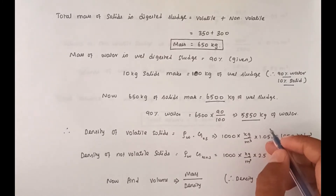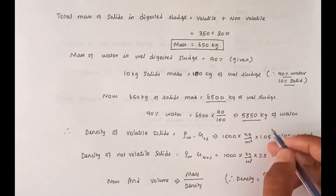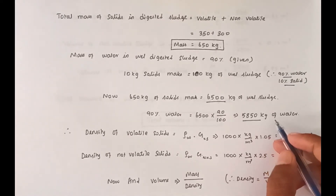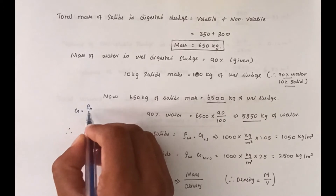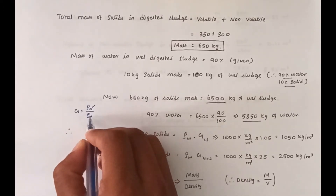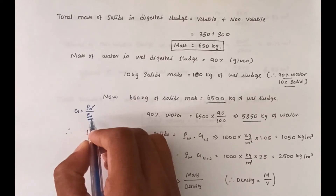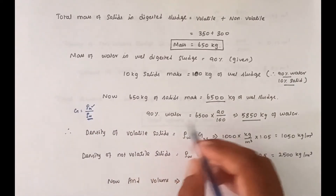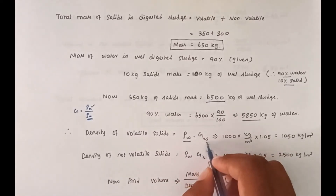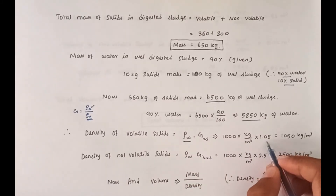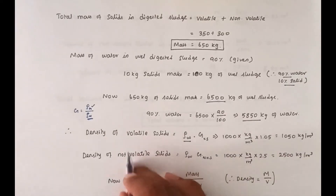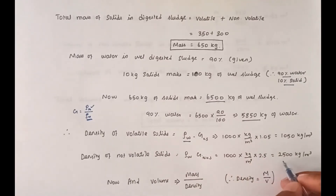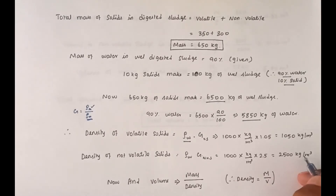Next, we calculate density using specific gravity: G = density of material / density of water. So density = G × ρ_w, where density of water = 1000 kg/m³. Density of volatile solids = 1.05 × 1000 = 1050 kg/m³. Density of non-volatile solids = 2.5 × 1000 = 2500 kg/m³.